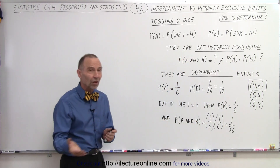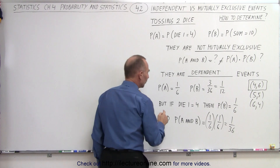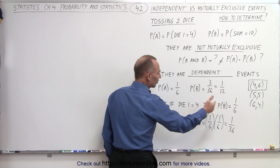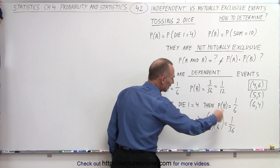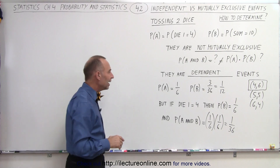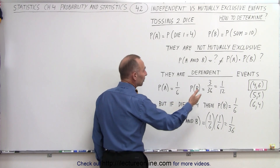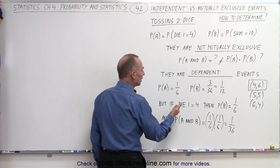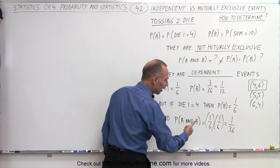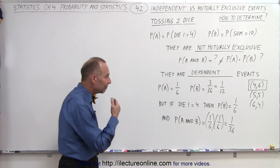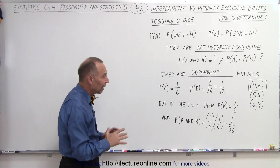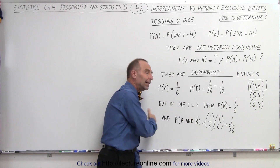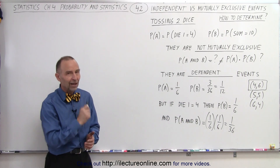Instead, we toss the first die and see the outcome. If die 1 is 4, there's a 1 in 6 chance the second die will be a 6, giving a total probability of 1 out of 36 for both events occurring. Similarly, if die 1 is a 5 or a 6, there's again a 1 out of 36 chance the sum will be 10. But if die 1 is 3 or less, there's no chance the sum can be 10. You can see that the probability of B depends completely on the outcome of A — and that is how it's done.